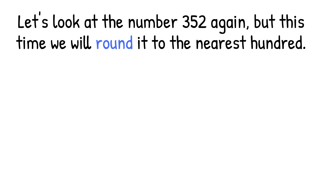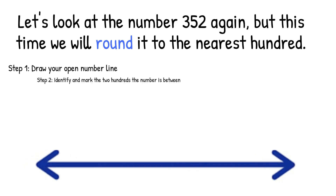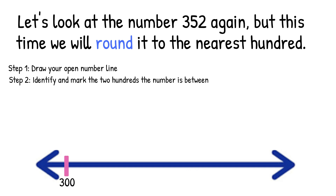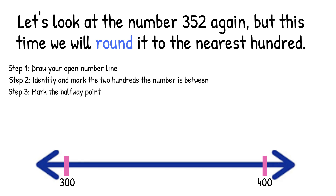Let's look at the number 352 again, but this time we will round it to the nearest 100. Step 1: Draw your open number line. Step 2: Identify and mark the 100s the number is between. Since it's 352, the lower 100 would be 300 and the higher 100 would be 400. Step 3: Mark the halfway point. Halfway between 100 is 50, so we're going to mark 350.